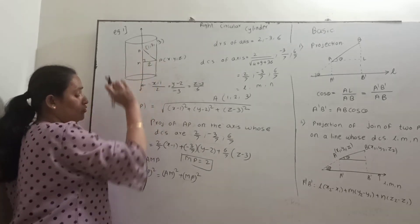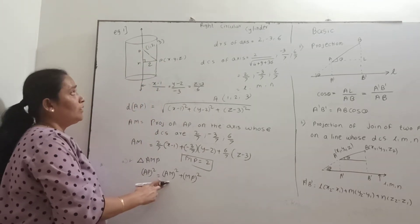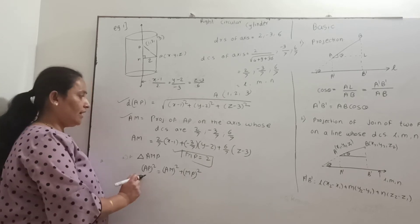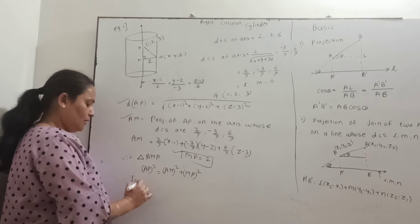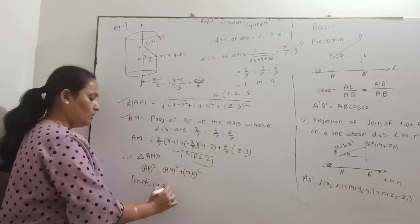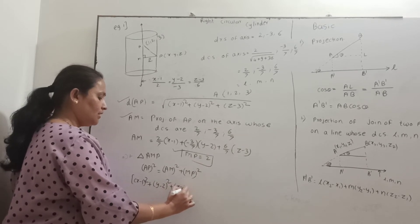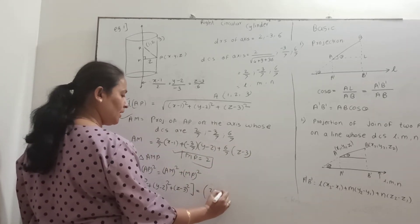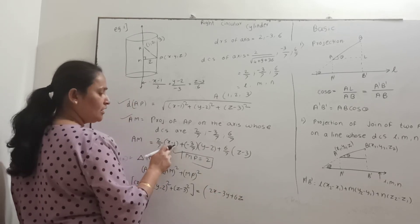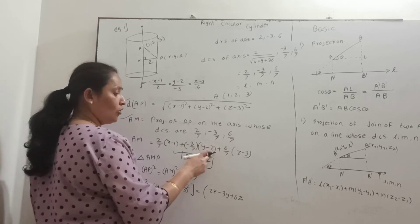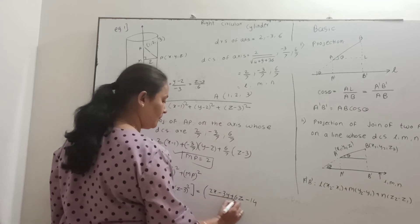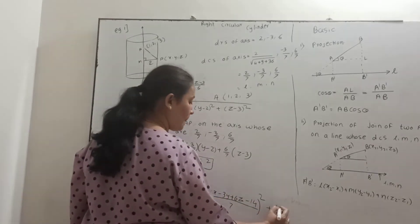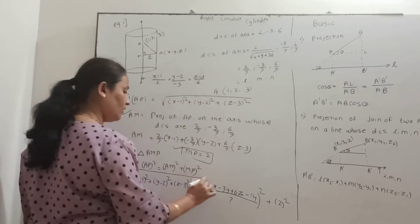In triangle AMP, applying Pythagoras: AP² = AM² + MP². Substituting: (x − 1)² + (y − 2)² + (z − 3)² = [(2x − 3y + 6z − 14)/7]² + 4, where the numerator constant is found as −2 + 6 − 18 = −14. This is the required equation of the right circular cylinder for Example 1.